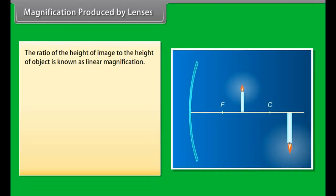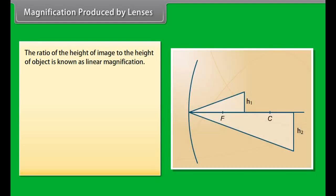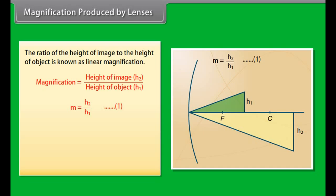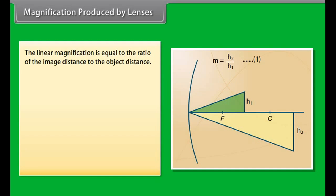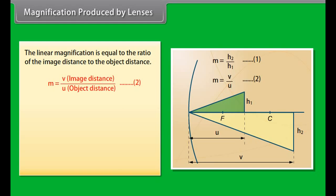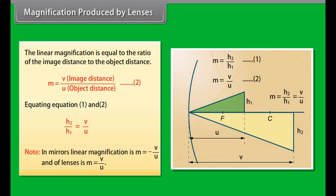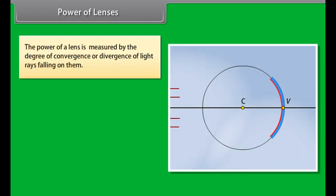Magnification produced by lenses: The ratio of the height of image to the height of object is known as linear magnification. M = H2/H1 (Equation 1). If magnification has a plus sign, the image is virtual and erect; if it has a minus sign, the image is real and inverted. Linear magnification also equals the ratio of image distance to object distance: M = V/U (Equation 2). Equating both: H2/H1 = V/U. Note: In mirrors, linear magnification M = −V/U.